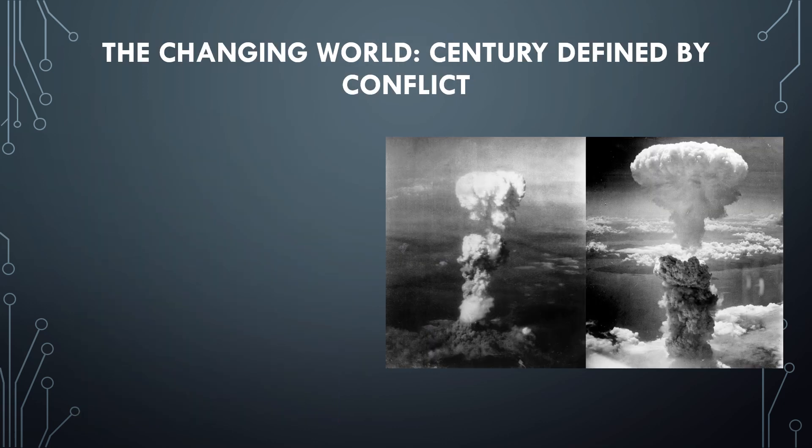Let's look at the first of two historical backdrops we need to understand for this unit. The 20th century presented a changing world defined by conflict. That picture on the right is the atomic bomb dropped on Hiroshima. In the 20th century — the 1900s — we have World War One and World War Two, not very far off from one another, marked by unprecedented loss. With World War One, we see conflict taking on a global scale for the first time.